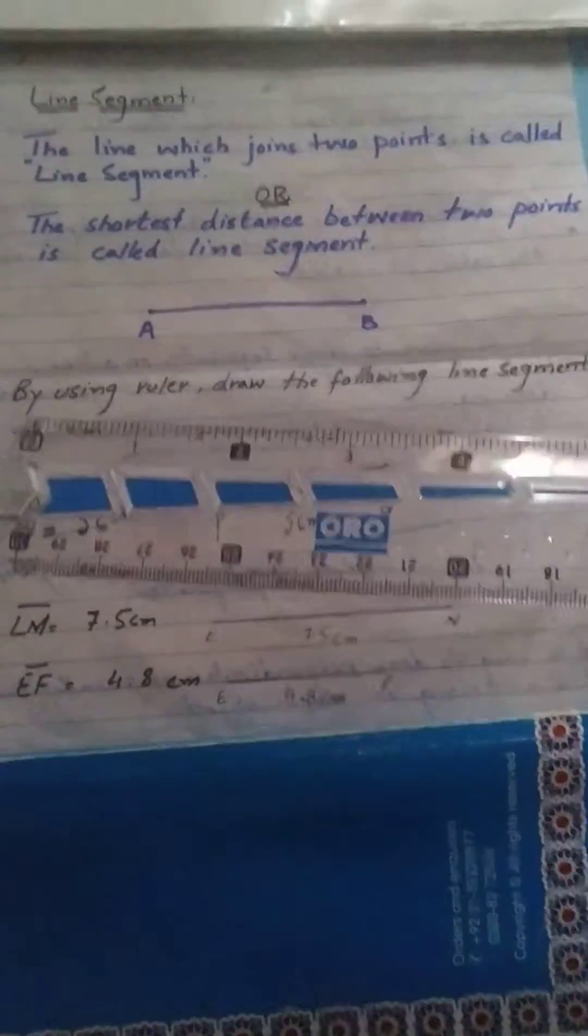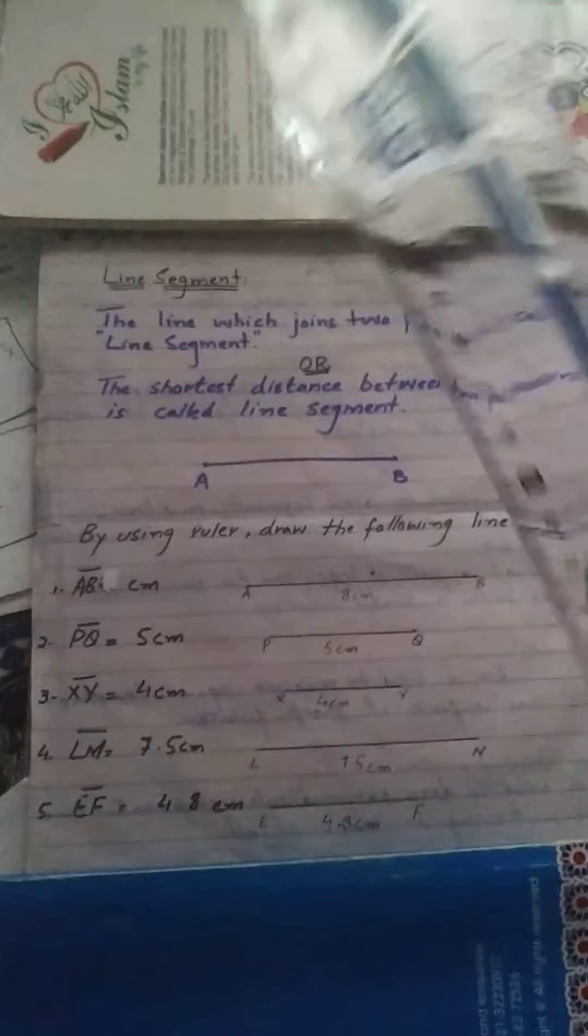Now I am going to tell you how to draw a line. You have a scale, this is called a ruler and a scale. It has two sides, one is for inches, the other is for centimeters.